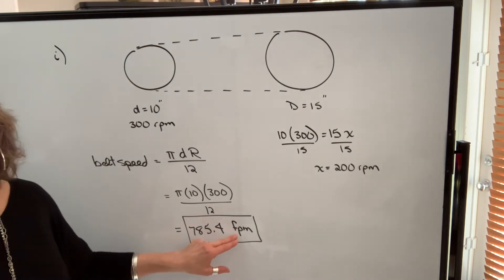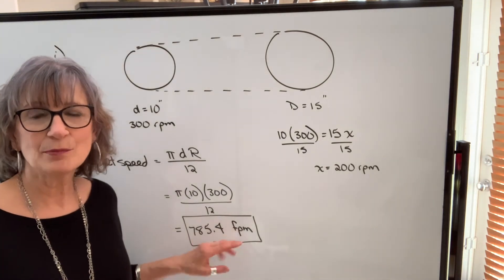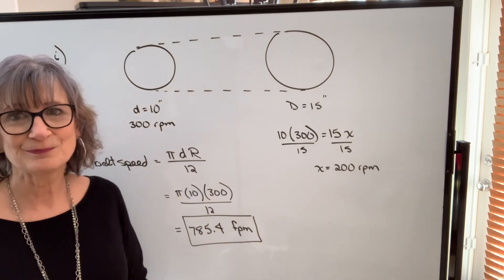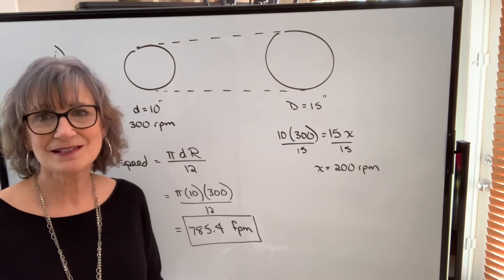If I want feet per second, the way I would do that is simply divide by 60. But I'll work with mine in feet per minute. You might hear it called surface feet per minute, same thing.